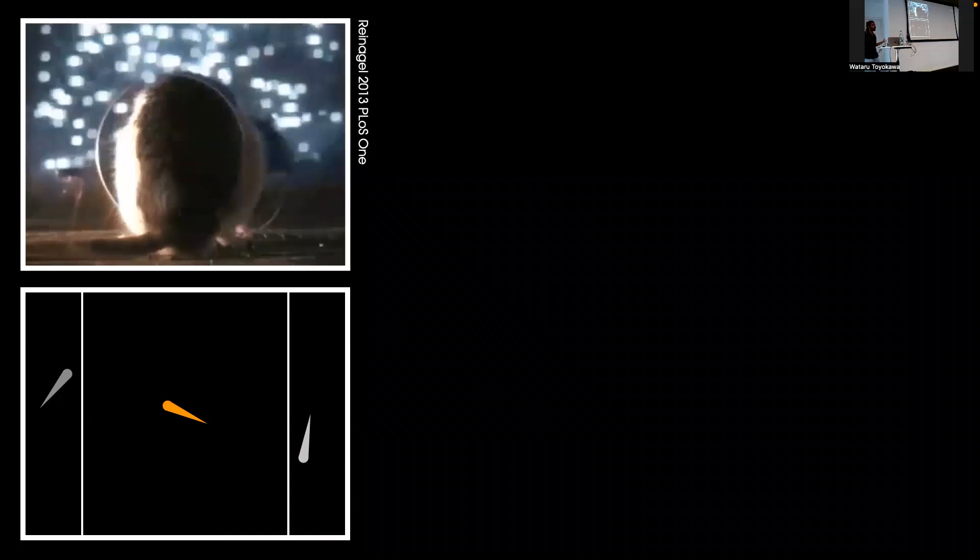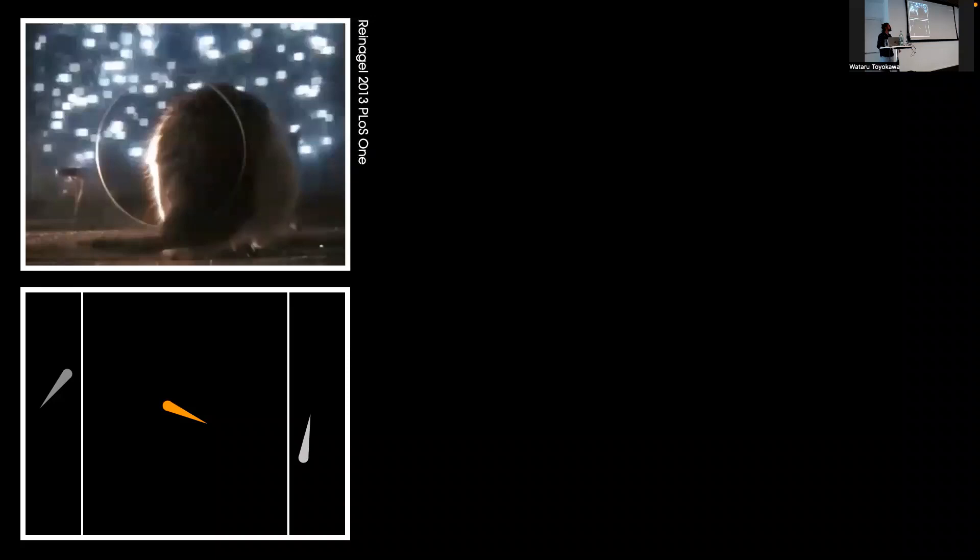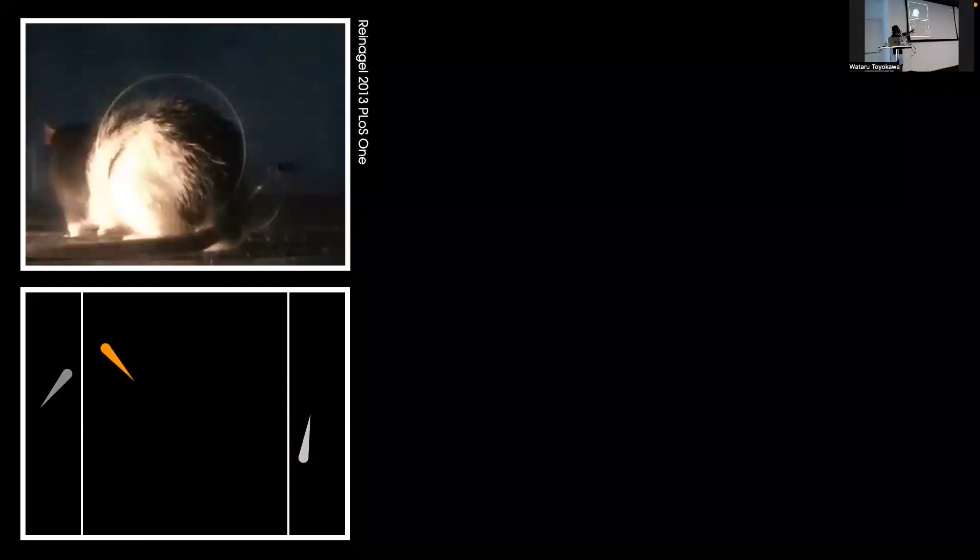In animal behavior, we use binary choice assays. This is a schematic where a focal individual has two conspecifics behind glass walls, and we measure its choice based on the proportion of time it spends with one individual or the other. While these assays have greatly furthered our understanding, they've missed a key aspect of decision-making: movement.